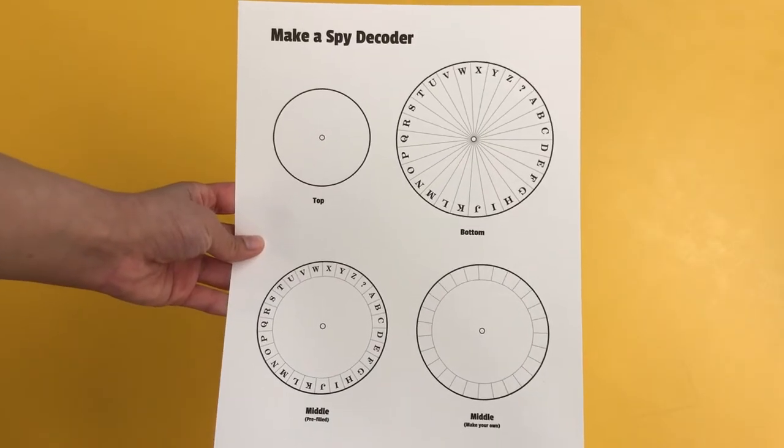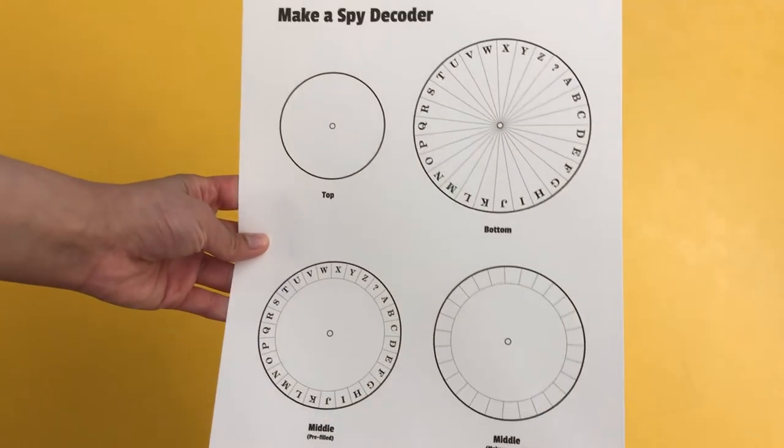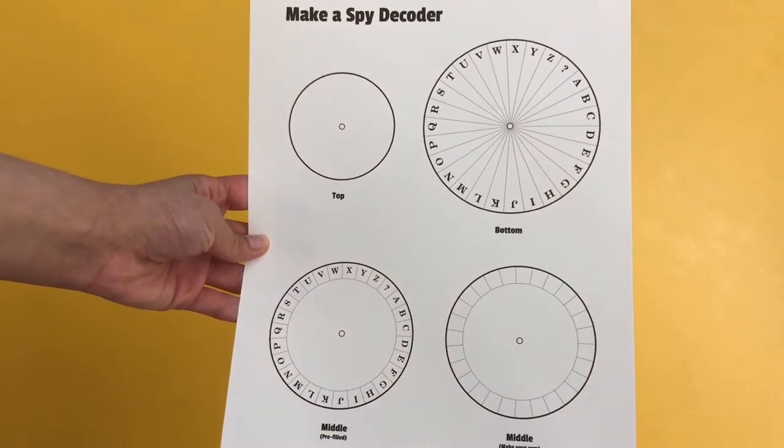You can write your own code using symbols instead of letters by picking the blank wheel. Today we're going to cut out the pre-filled wheel and the smallest one.